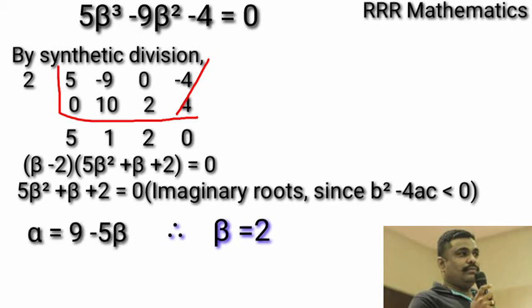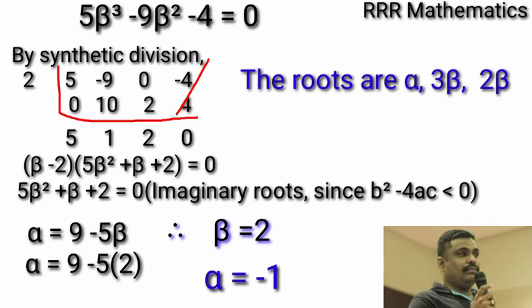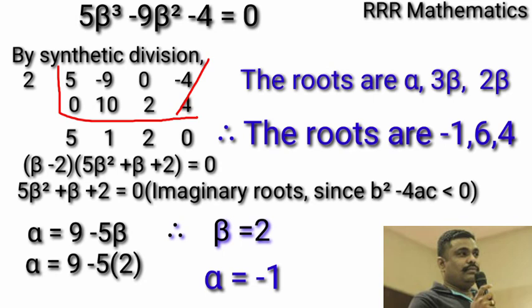When beta equal to 2, what is alpha, which is 9 minus 5 beta. So, alpha equal to 9 minus 5 into 2, which gives minus 1. Therefore, the roots are alpha, 3 beta, 2 beta. Alpha is minus 1, beta is plus 2. Therefore, the required roots are minus 1 comma 6 comma 4.